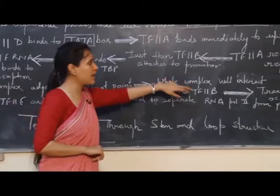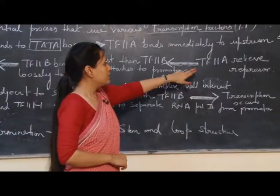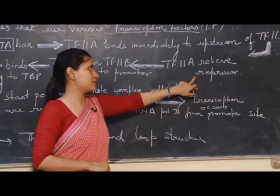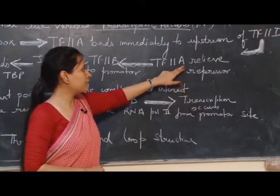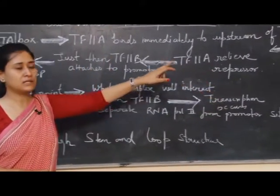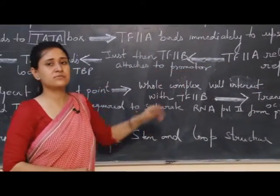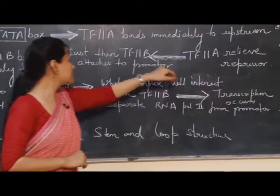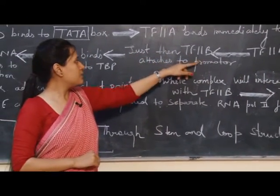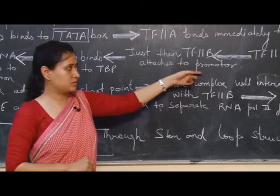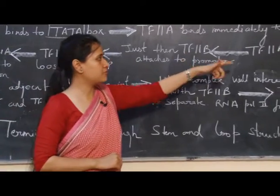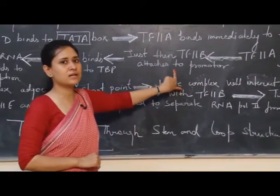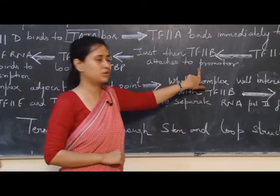In the third step, what will happen? TfA will relieve the repressor, which is very important, because after relieving the repressor, only then the whole process will be active. After relieving the repressor, TfB will attach to the promoter. Just after the removal of the repressor, TfB will come and bind to the promoter.